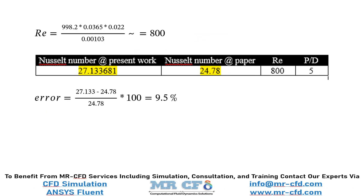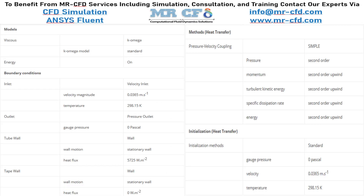In this slide we have calculated the Reynolds number, and we have compared our Nusselt number obtained by our CFD simulation with the Nusselt number reported by the paper for Reynolds number equal to 800 and p/D ratio of 5. You can see that we have calculated the error, and our error is equal to 9.5 percent.